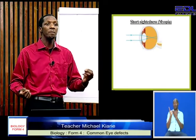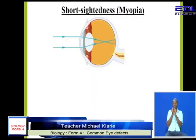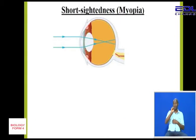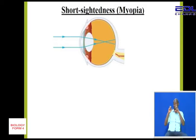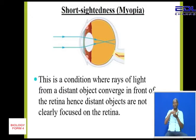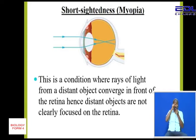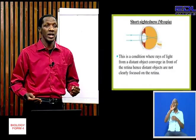On your screen we have an illustration diagram representing the changes in the eye when we have myopic vision. Analyze those rays of light and see where they are converging — the point where the rays are meeting. As you can see on the diagram, myopia is a condition where rays of light from a distant object are focused at a point in front of the retina. For that reason, distant objects cannot be focused clearly and they appear blurred — blurred means they are not clear.